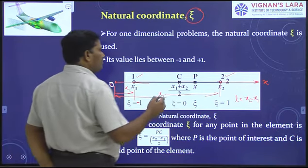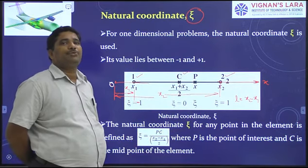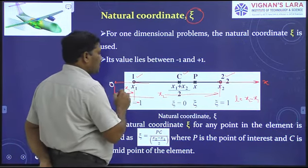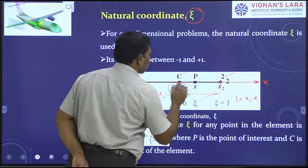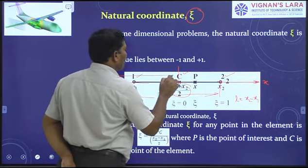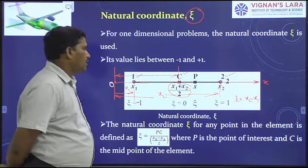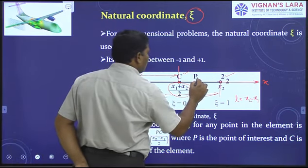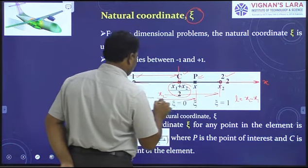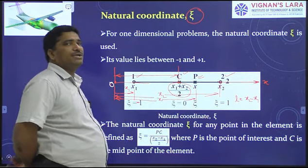If we determine the coordinate of the midpoint C, it is simply (x1 + x2)/2. If we measure the distance of C from the coordinate origin O, we get (x1 + x2)/2. Now I take a point of interest P, at distance x units from the coordinate origin.